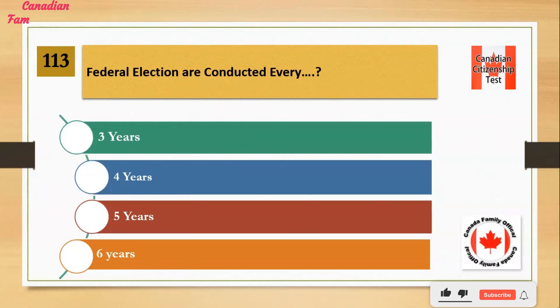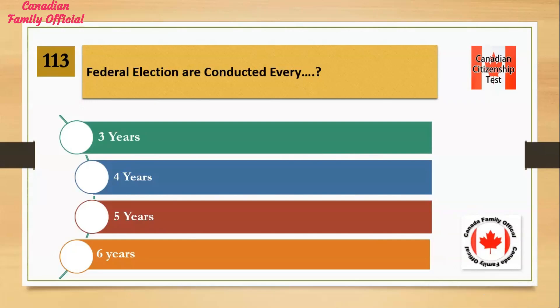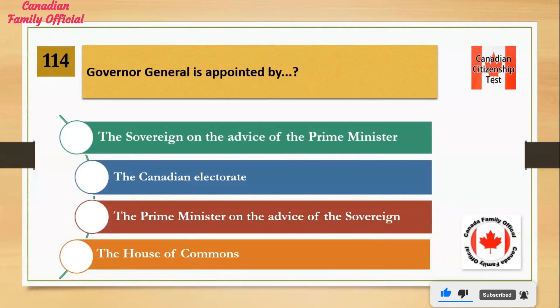Federal elections are conducted every: Number 1: 3 years. Number 2: 4 years. Number 3: 5 years. Number 4: 6 years. And the answer is 4 years.